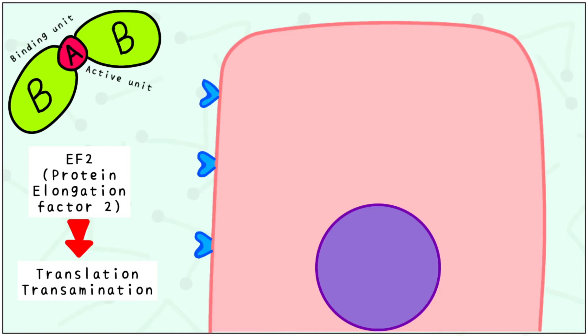It is this protein EF2 that gets inactivated or locked by the toxin. The toxin is released by the bacteria, which then comes in contact with other cells through the bloodstream. This toxin binds to specific receptors or toxin receptors on the cell surface through the binding unit.